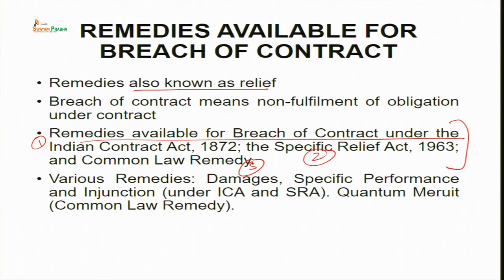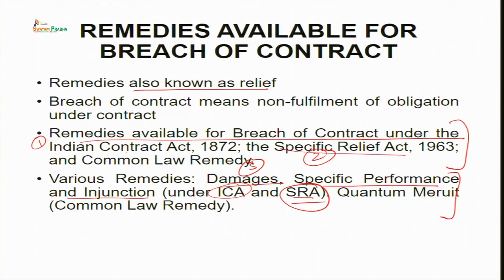Remedies available for breach of contract are provided under the Indian Contract Act, the Specific Relief Act, and common law remedy - quantum meruit. The remedies are: damages under the Indian Contract Act 1872 (ICA); specific performance and injunction under the Specific Relief Act (SRA); and quantum meruit as a common law remedy.